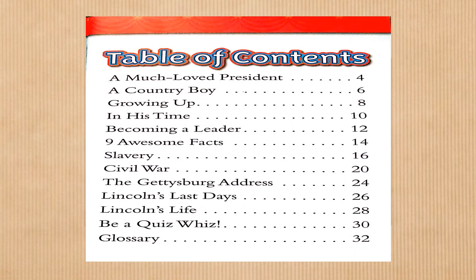We have a table of contents over here, which is a text feature in an informational text. The table of contents is a list of topics or parts of a book and the page numbers on which they begin. It is found at the beginning of the book. So we have: a much loved president, a country boy, growing up in his time, becoming a leader, nine awesome facts, slavery, civil war, the Gettysburg Address, Lincoln's last days, Lincoln's life, be a quiz whiz, and a glossary.